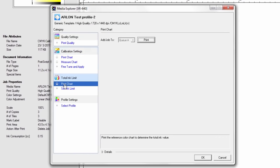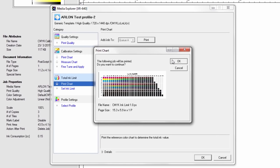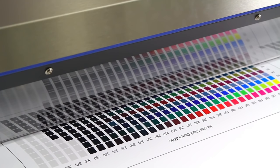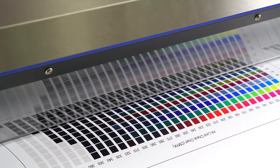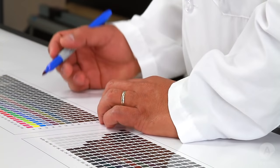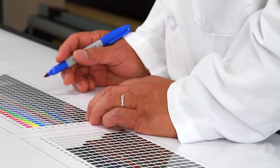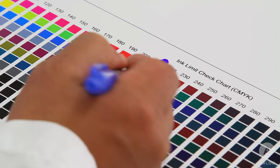Next, we will determine the total ink limit. Click on print to print the chart to determine the total ink limit. Visually inspect the chart to determine the point where each color shows optimum brightness and depth without getting dark or muddy.